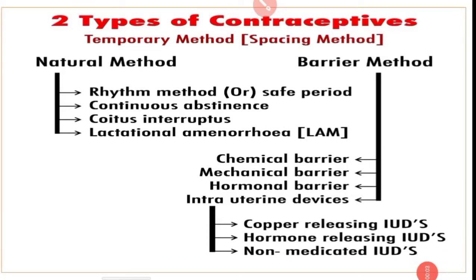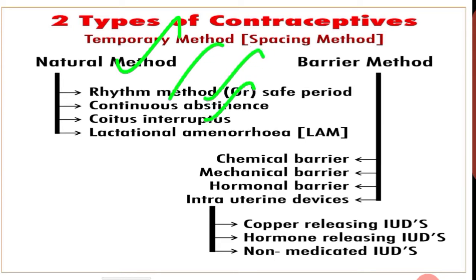In this video we are going to start with barrier method, because we completed natural methods in the last video. There are two types of contraceptive methods: first is temporary method, second is permanent method. In temporary method, we completed natural method — rhythm method, continuous abstinence, coitus interruptus, lactation, and amenorrhea. Now we are going to see about barrier method.